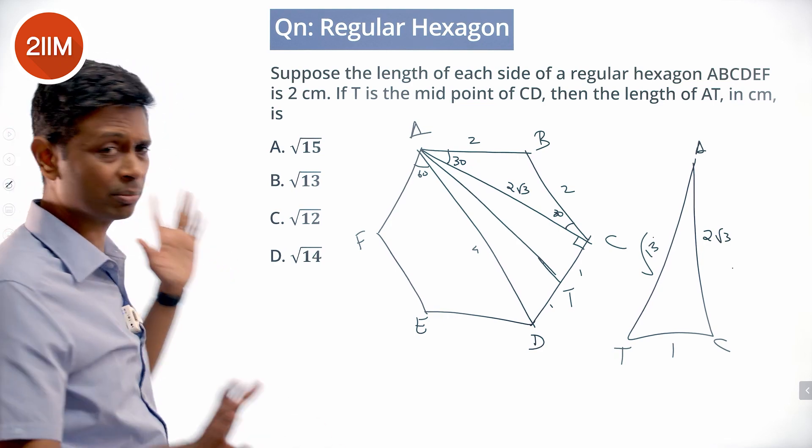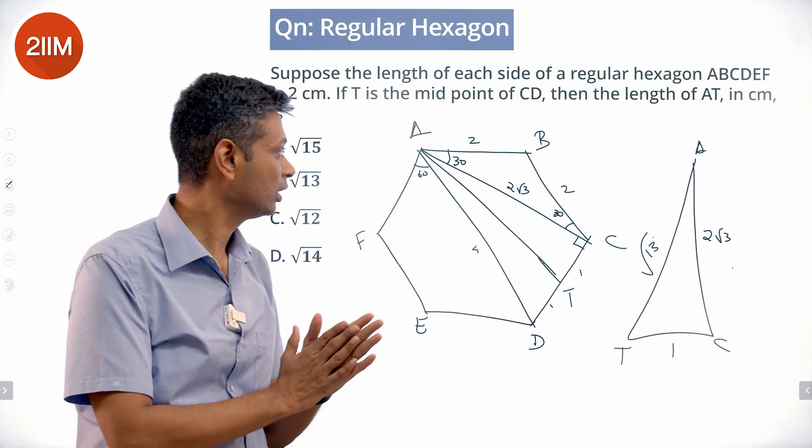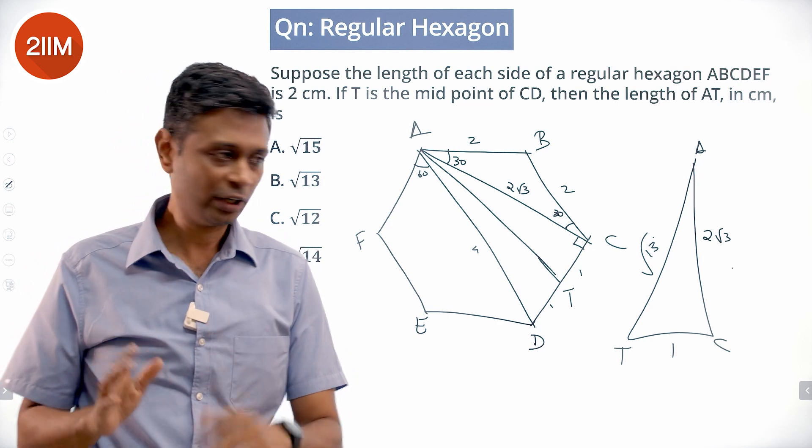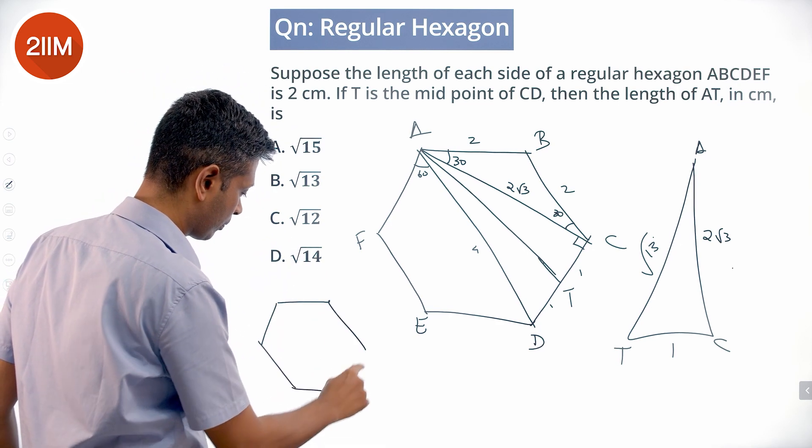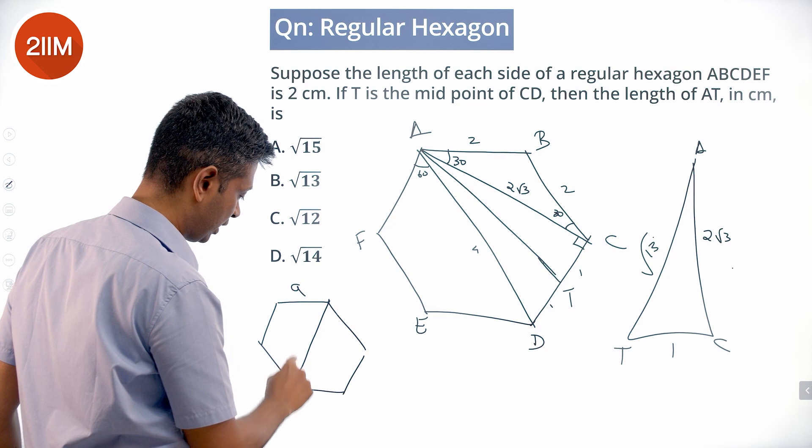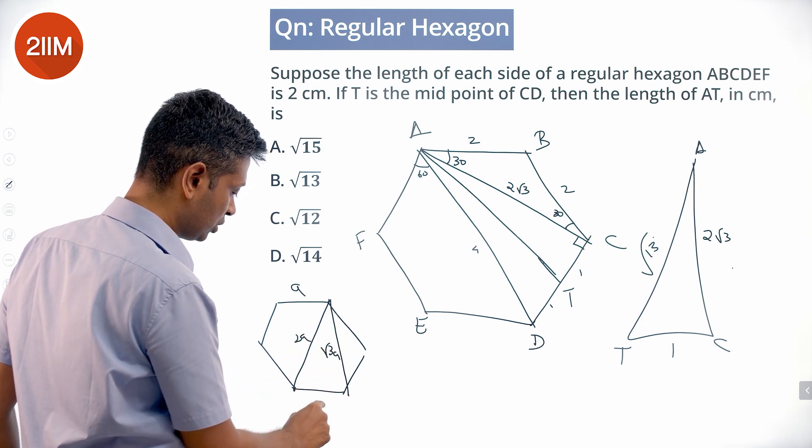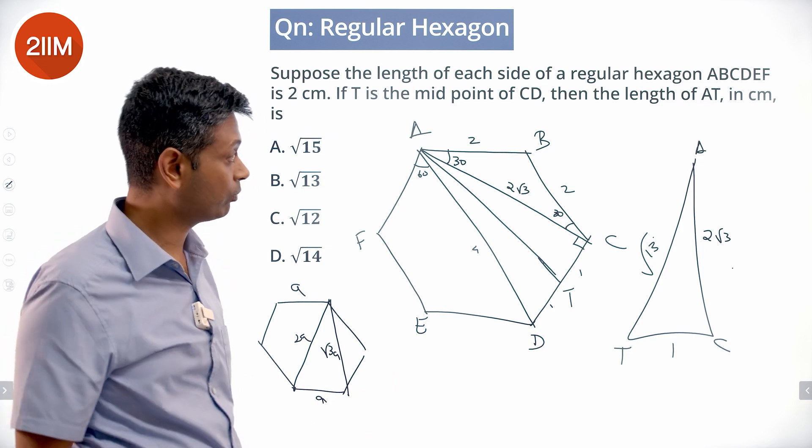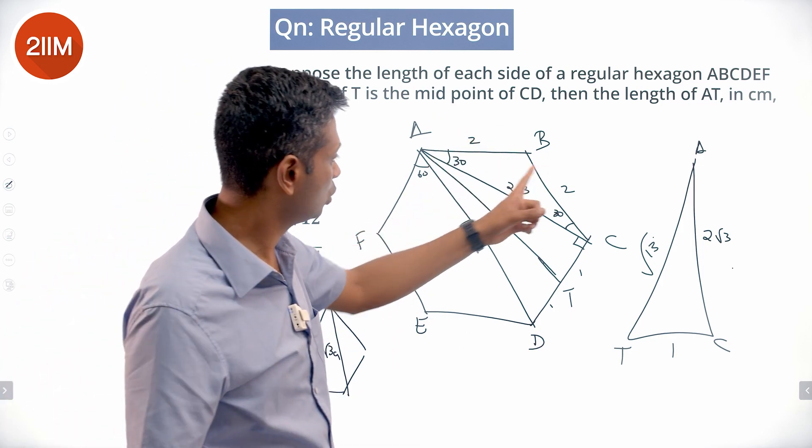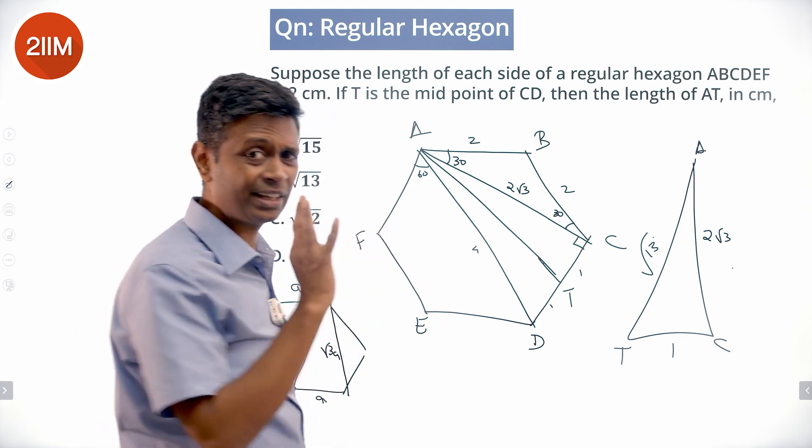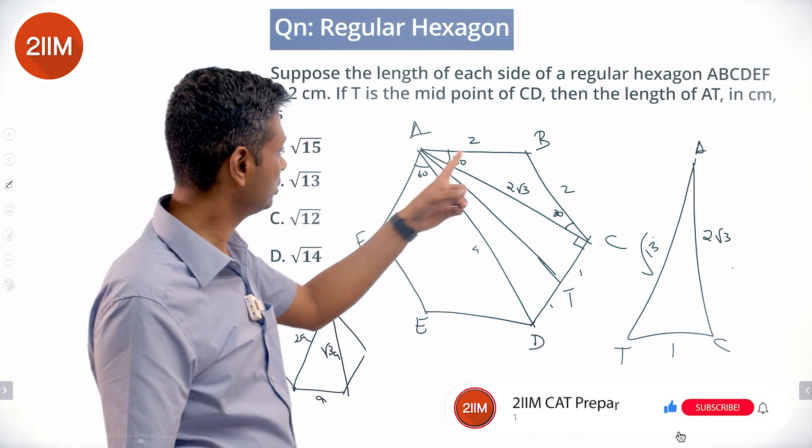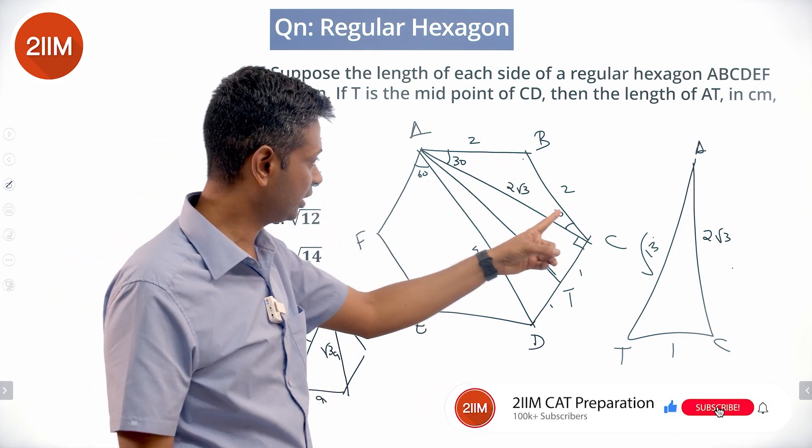I'm going to go over this method because I think I rushed through a little bit. First of all, I know that in a regular hexagon of side A, this diagonal is 2A, this diagonal is √3A. Just Pythagoras theorem, no rocket science there. In a regular hexagon, each internal angle is 120, so this is 120. So this triangle has angles 30 and 30.